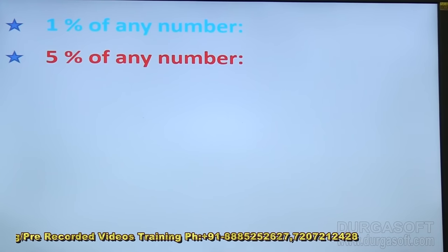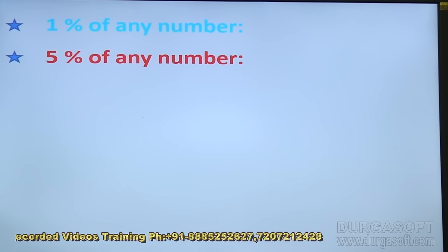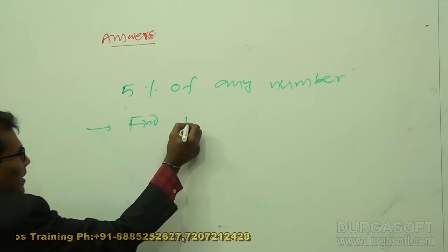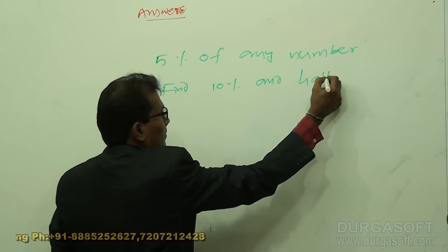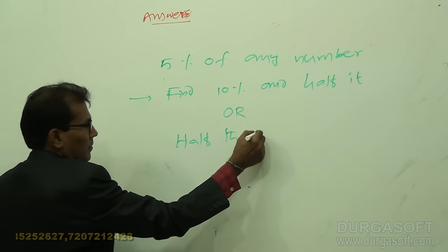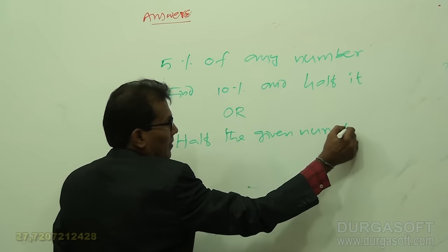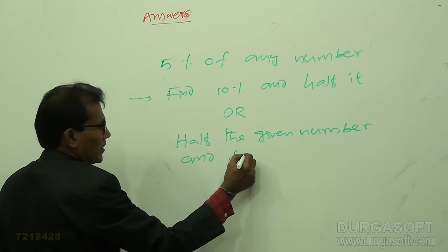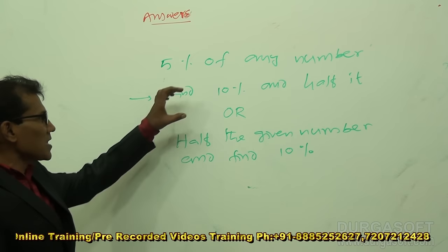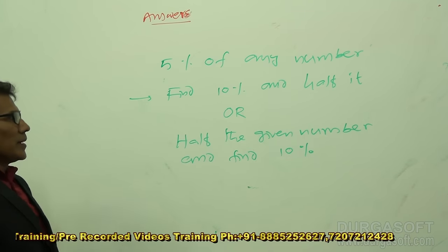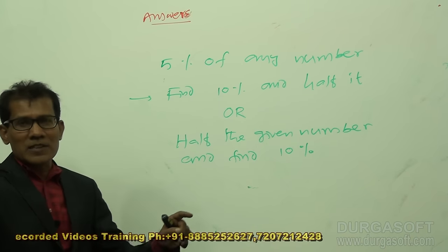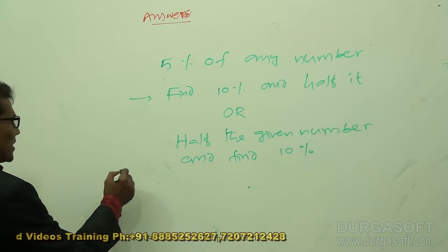If the given number ends with 0, use the first technique — find 10% then halve it. If the number does not end with 0, use the second technique — halve the number first, then find 10%.